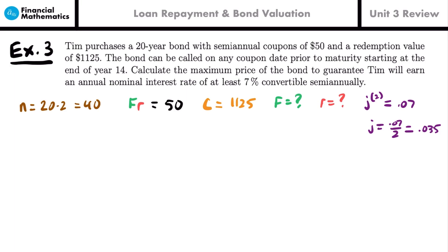The bond can be called on any coupon date starting at the end of year 14, meaning starting at coupon 28 (14 × 2), up through coupon 40 (maturity). The question is whether Tim should call it early or wait until maturity. We typically determine this by comparing the coupon rate and the yield rate.